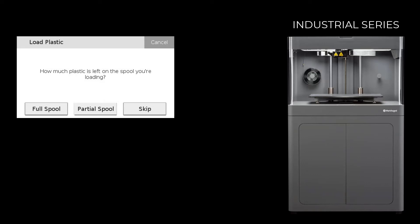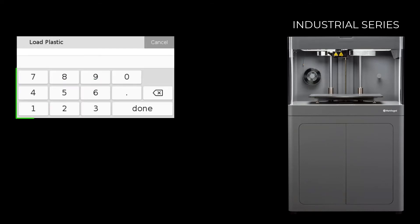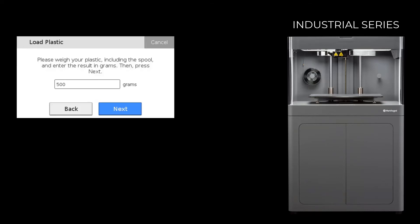Only select full spool if you are loading a new standard 800cc spool of material. Full spools will not require a weight input. For any other options, select the partial spool. Input the weight of the spool on your printer's touch screen and press done. Press next on the printer's touch screen.